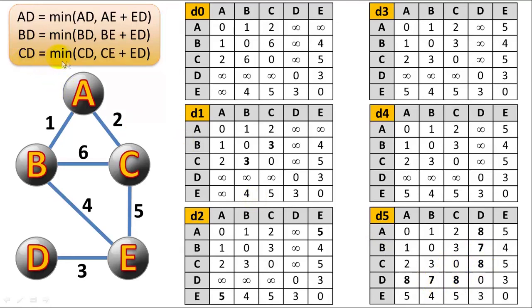So C to D equals the min of C to D, which is infinity, or C to E plus E to D. C to E is five, E to D is three, that gives us eight. So we populate eight in this cell, and the formulas that I applied to these in row D here are these formulas, which are pretty obviously similar.